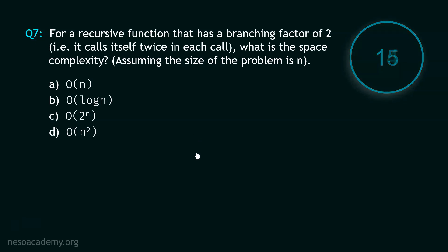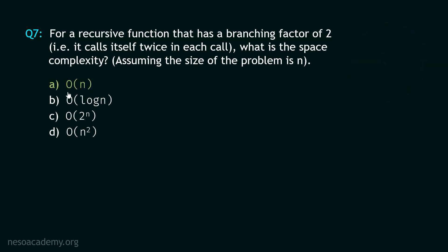And your time starts now. Stop. The correct option is option A: O(N). Even though the branching factor is 2 — meaning the function calls itself twice in each call — the space complexity remains O(N), because the maximum depth of recursion remains N, assuming the problem size is N. Now let's move to question number 8.